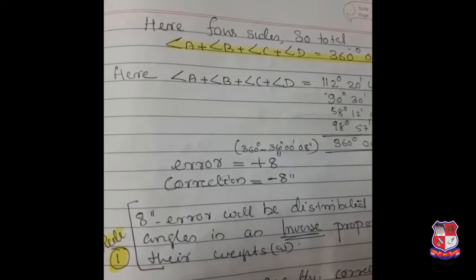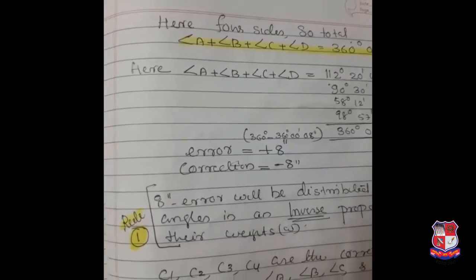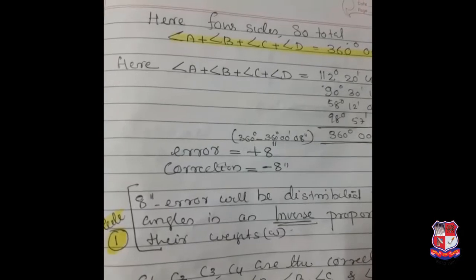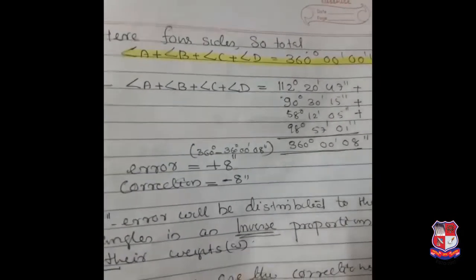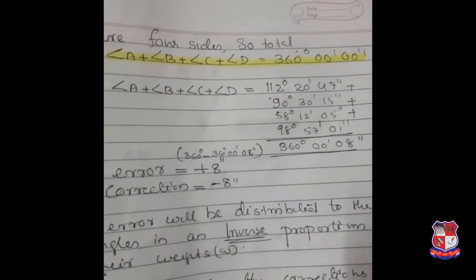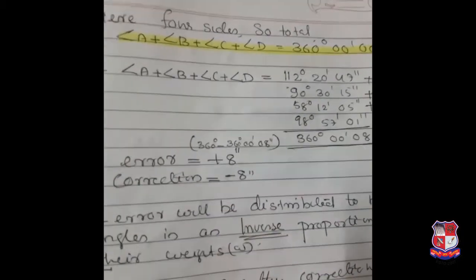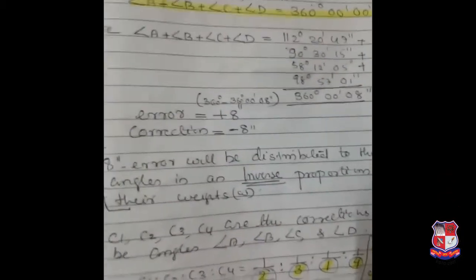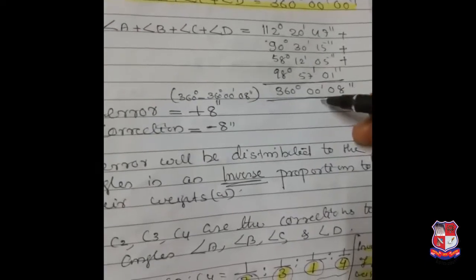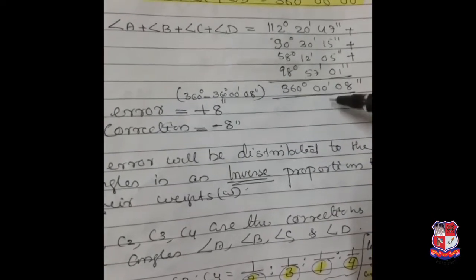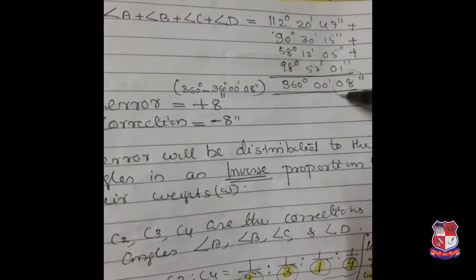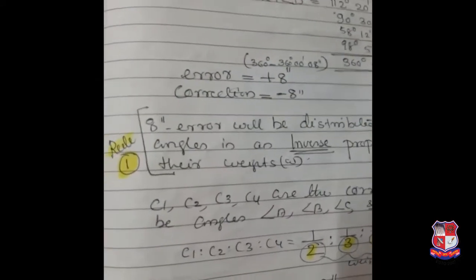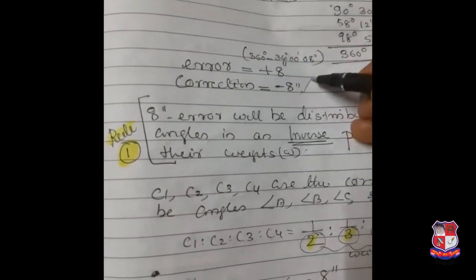Here four sides are given, meaning it is a quadrilateral, so the angles should sum to 360 degrees. Adding all the sides, the total is coming to 360 degrees, 0 minutes, 8 seconds — so 8 seconds is extra, and a correction should be applied.